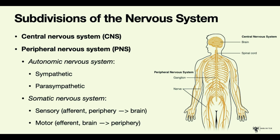The nervous system is divided into different parts based on function. When we say central nervous system, we are referring to the brain which is found within the skull and the spinal cord which is found within the vertebral column that runs across the midline of the body.